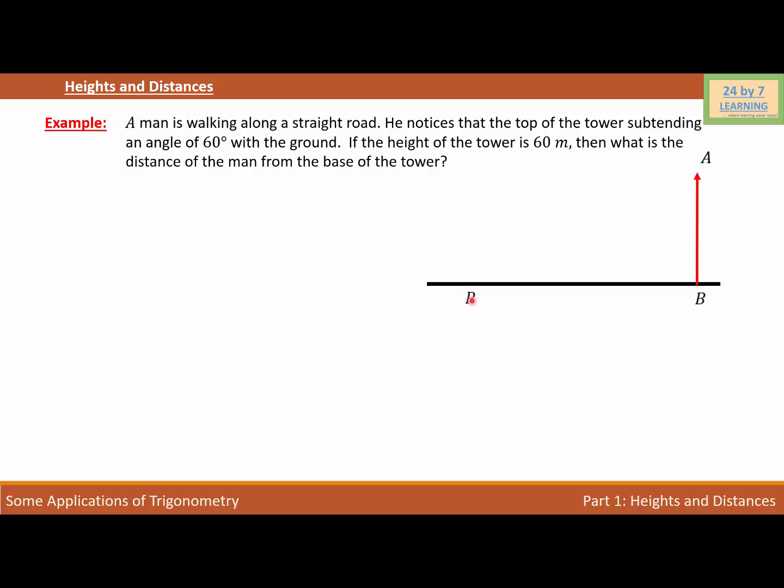When the man looks at the top of the tower, which is point A, then the man will look along this line, which is the line of sight. The line of sight makes an angle of 60 degrees with the horizontal. So PA makes an angle of 60 degrees with PB.